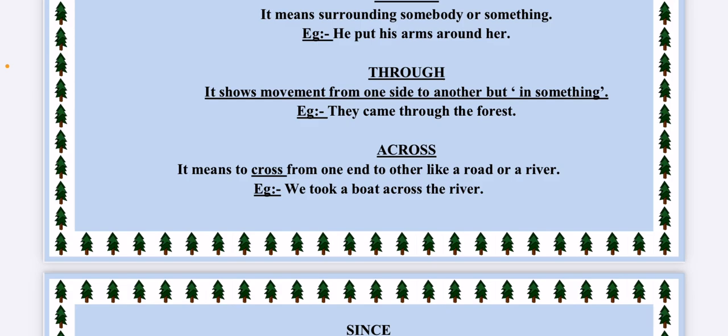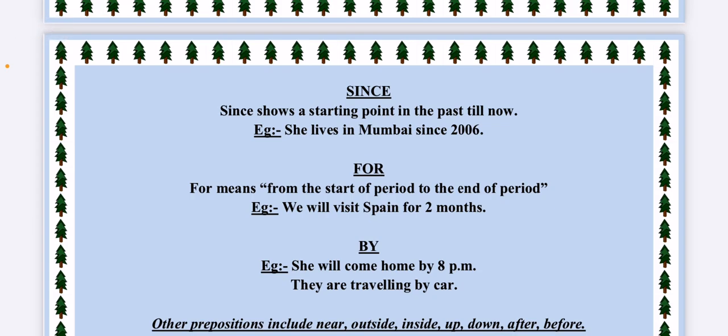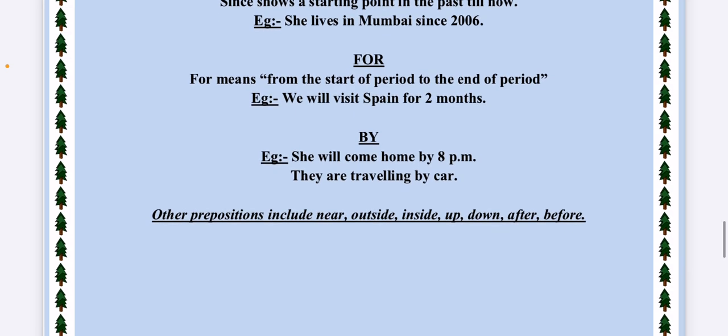Next, SINCE, FOR and BY. See the difference between since and for. Since is used to show a starting point in the past and it is going on till now. She lives in Mumbai since 2006, so since 2006 she is living in Mumbai only. And FOR means that it is explaining your duration, a start period and an end period. We will visit Spain for two months, so it is giving you a duration. For two months, start and end, you will use for. And to explain something from past till now you will use since. I am studying since morning. I will study for two hours. This is the difference. And BY is used to show by what time you will come back home, by what medium you are traveling.